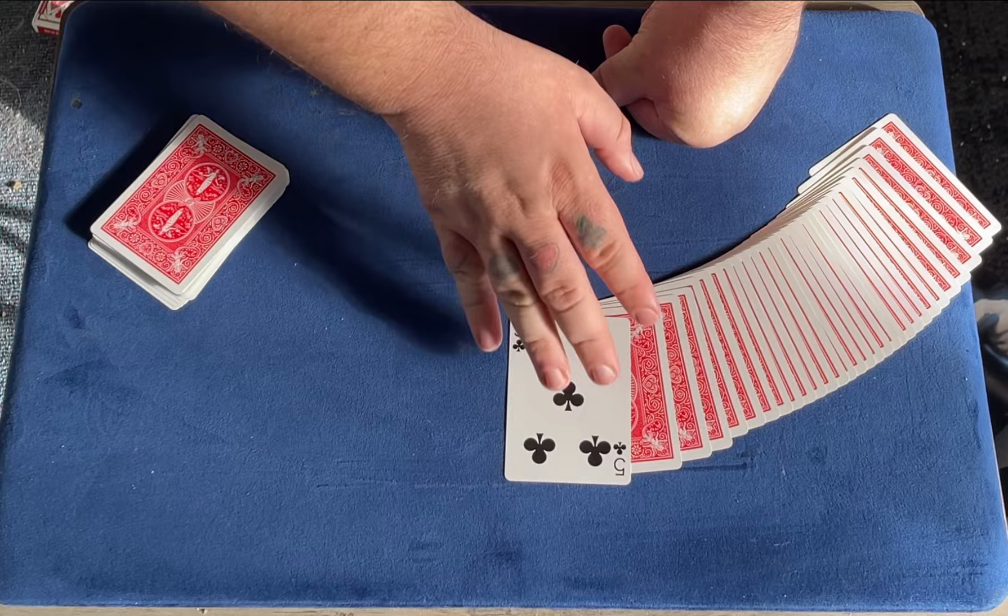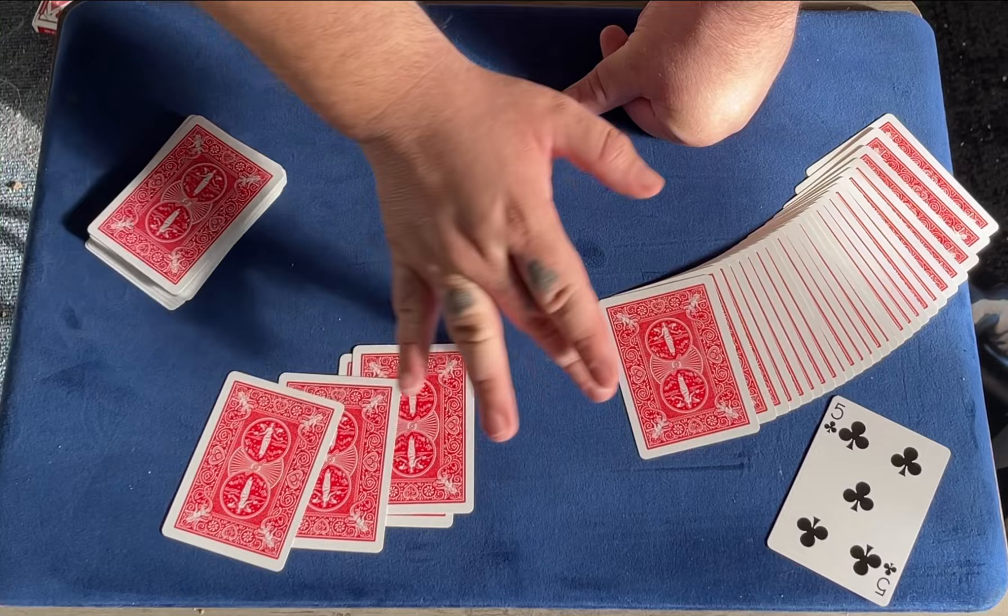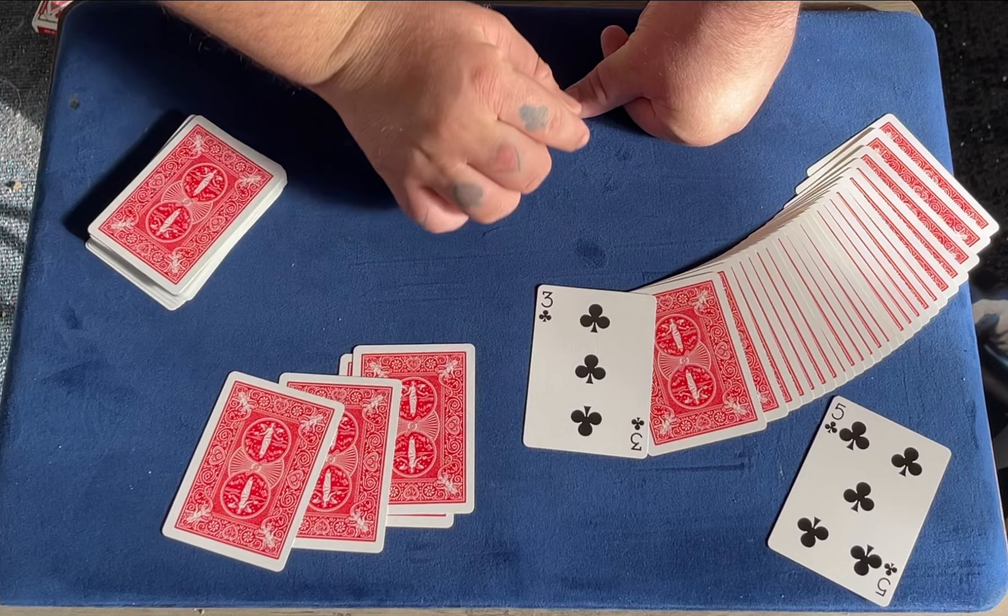That's one, two, three, four, five cards away. What was your card? The three of clubs? Boom, there it is.